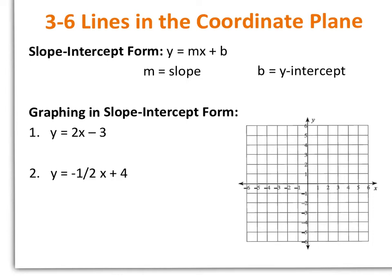Alright, section 3-6, we're going to look at lines in the coordinate plane, and this will be a little review from Algebra 1. So if you recall, slope-intercept form is y equals mx plus b, where m is the slope and b is the y-intercept, and we're going to graph numbers 1 and 2 on the same graph, and they are both in slope-intercept form.